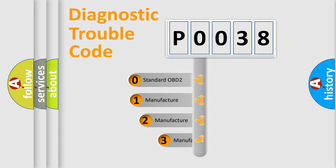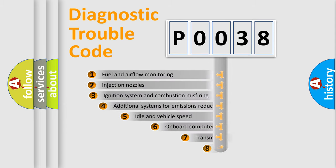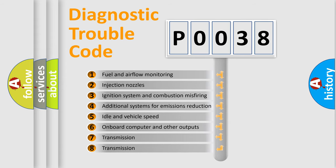If the second character is expressed as zero, it is a standardized error. In the case of numbers 1, 2, 3, it is a more specific expression of the car-specific error. The third character specifies a subset of errors.